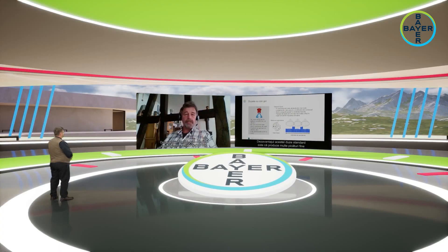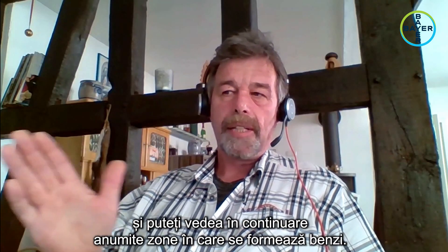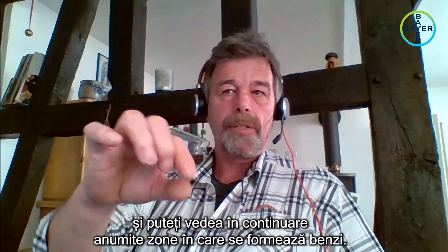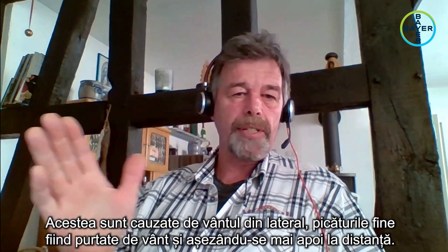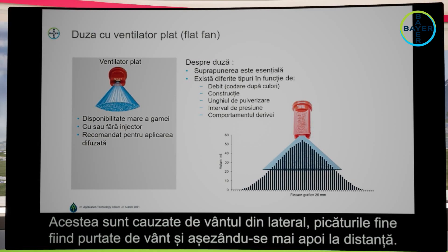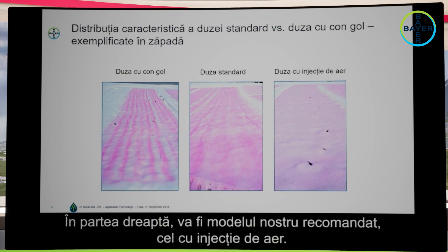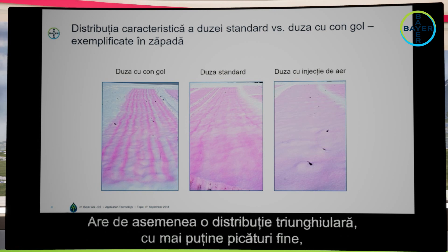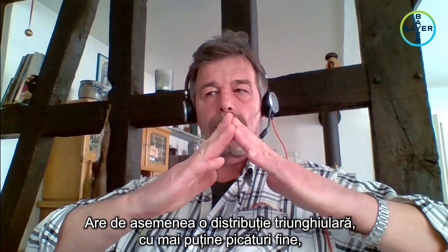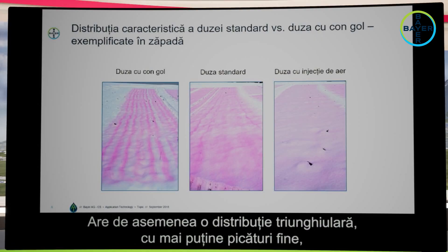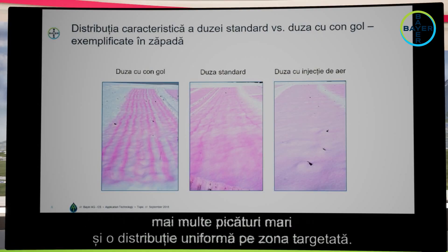A disadvantage of the standard nozzle is that you have a lot of fine droplets. You can see some areas with stripes — this is caused by a little bit of side wind, which takes these fine droplets away. On the right hand side is our recommendation: the air injection nozzle, which also has a triangular distribution but with less fine droplets, a coarser droplet spectrum, and a very even distribution on your target area.